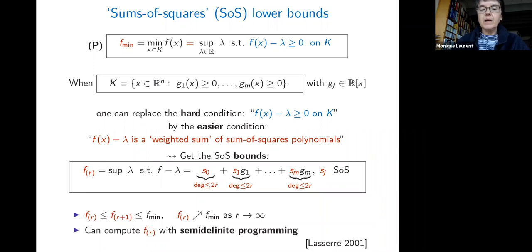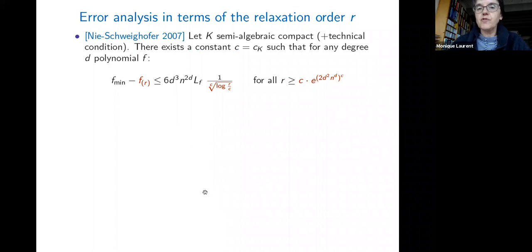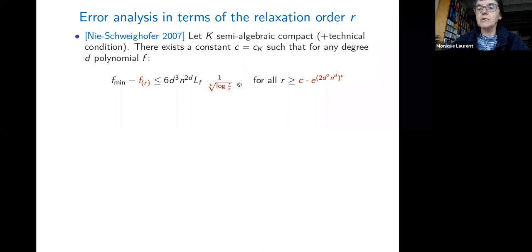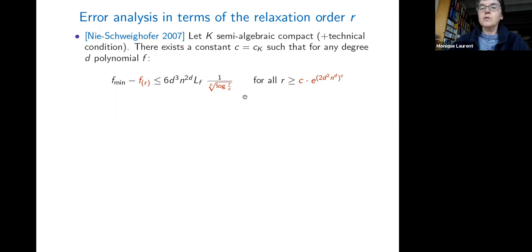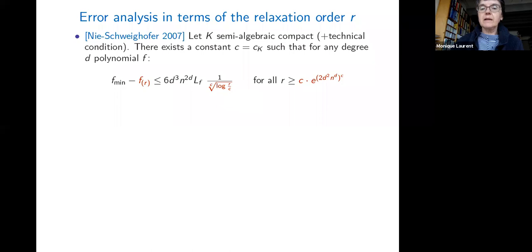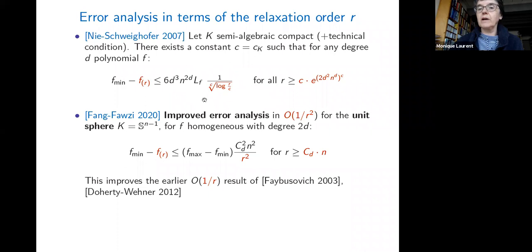This gives lower bounds on the minimum that improve as the degree bound increases, converge asymptotically, and can be computed via semi-definite programming. Regarding the error: a result by Nie and Schweighofer from 2007 gives an upper estimate on the error, involving a constant depending on degree and number of variables, with the bound order appearing as sqrt(log r) — quite a weak estimate.